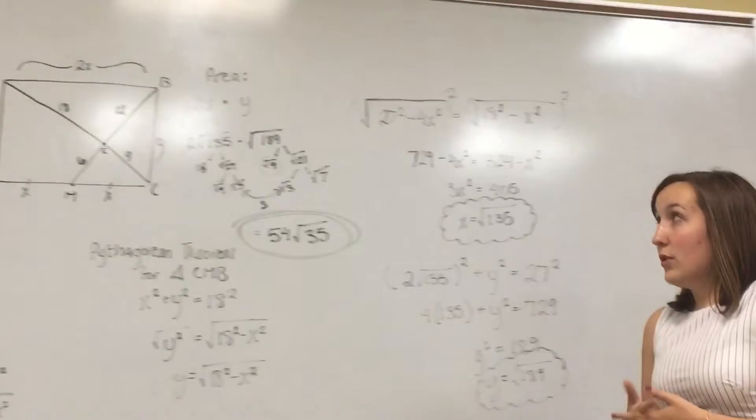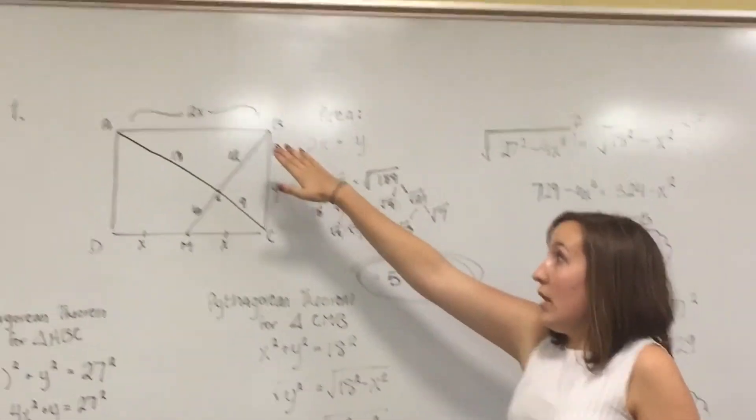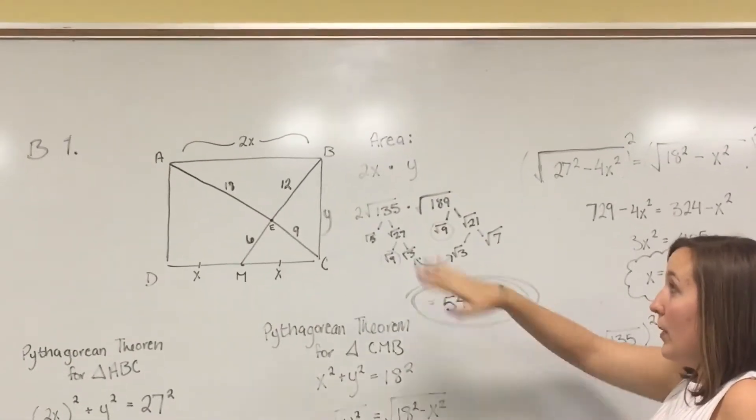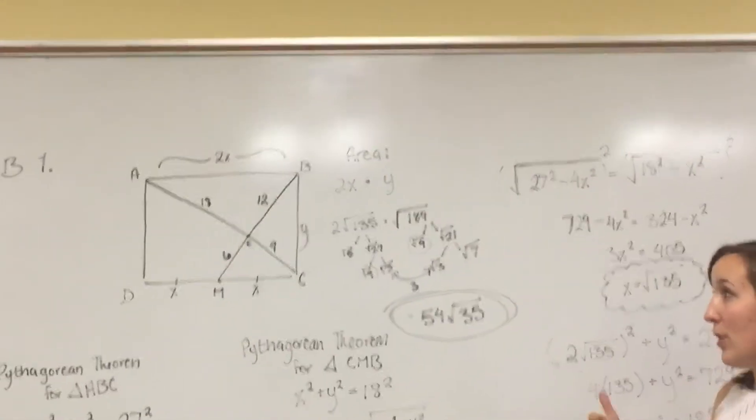So now we're getting close to the end. We can finally solve for area. So the area of it is going to be 2x, that value up there, times y, the other side. So I set up sort of a little tree diagram here to be able to solve the radicals.